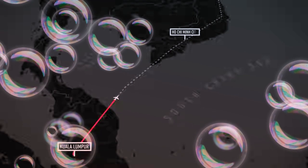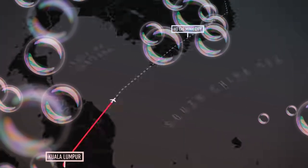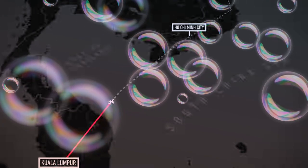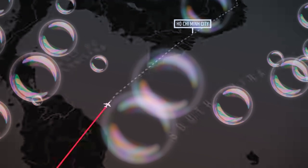Flight 370 is then instructed to signal air traffic control in Ho Chi Minh, Vietnam as it is about to enter Vietnamese airspace. The flight controller in Kuala Lumpur says good night with no sign that anything should be amiss.